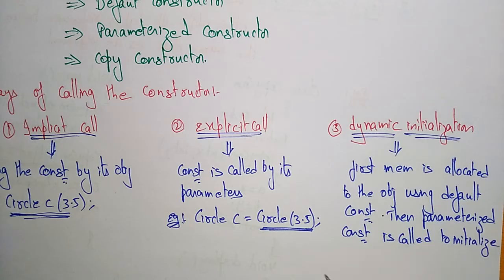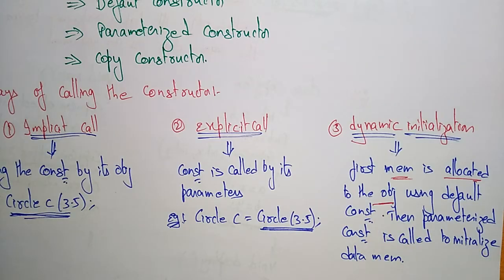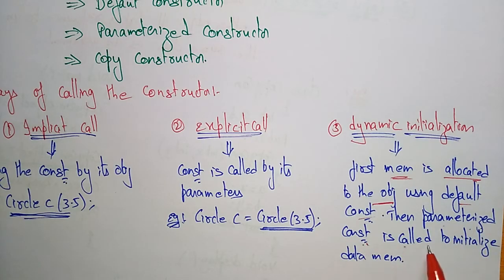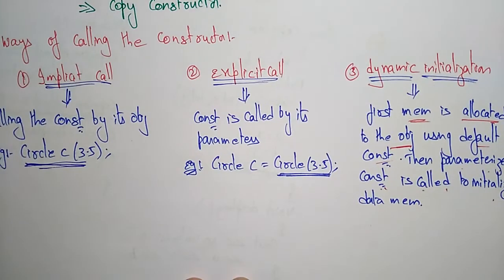In dynamic initialization, first memory is allocated to the object using the default constructor — using any default values to allocate memory to the objects. After that, the parameterized constructor is called to initialize the data members. First it takes default values, then the user provides values to those variables.